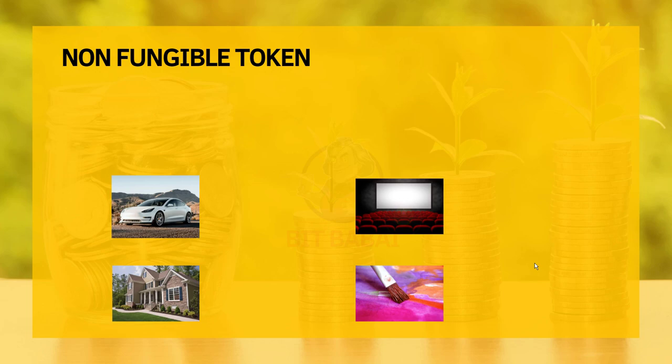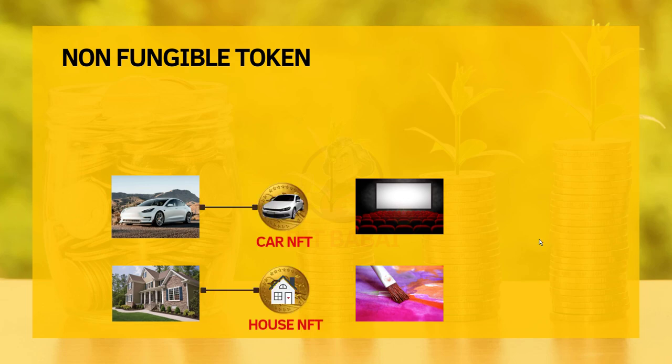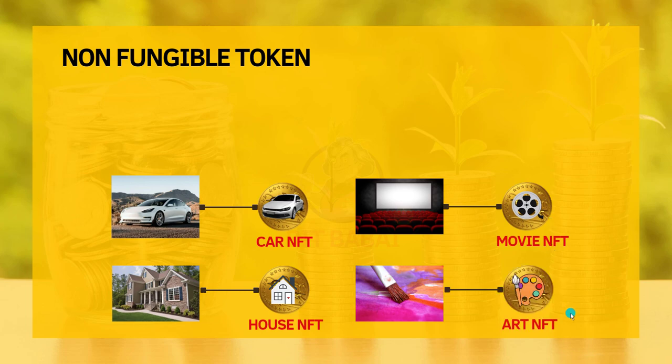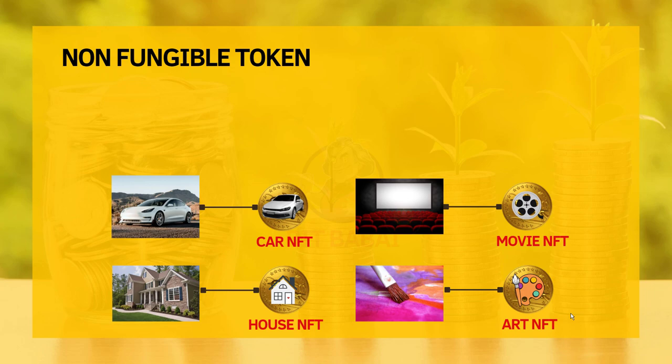Think of a token representing the ownership of all these items. A car or house owner can have a token representing ownership of the asset — that's two NFTs for you. A movie producer or production house can have an NFT for ownership of a movie, and same with an artist for their artwork — that's an art NFT. So there are a number of types of NFTs depending on the real-world asset it is tied to. In the next video of this series, I will deep dive into what an NFT is and why we need NFTs to prove ownership. Type any specific NFT topics you're interested in below, and I'll cover them in the series!